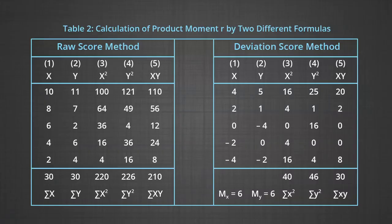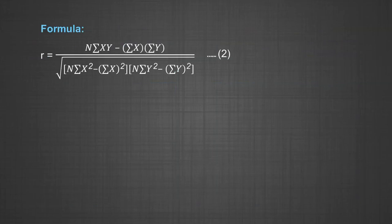The process of calculation of R is explained in Table 2, which is concerned with the calculation of the product moment correlation coefficient by two different formulas: the raw score method and the deviation score method. The formula for the raw score method is: R equals [N×ΣXY − ΣX×ΣY] divided by the square root of [N×ΣX² − (ΣX)²] times [N×ΣY² − (ΣY)²].